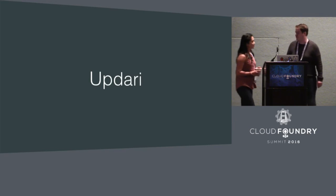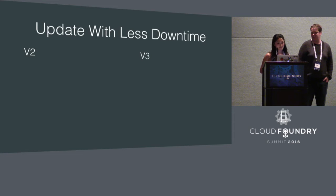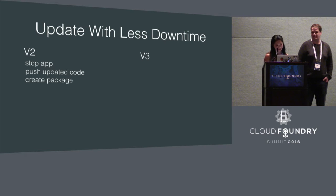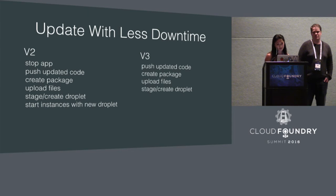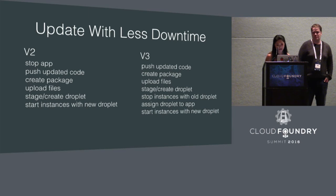Updating — in V2, we stop the app, push our updated code, create a package, upload the files, and then stage those files to create a droplet. Once done, we start the instances with the new droplet. In V3 we do something similar but different: we push the updated code, create a package, upload those files, and stage that droplet. Then we stop the instances with the old droplet, assign the new droplet to the app, and start the instances with the new droplet.